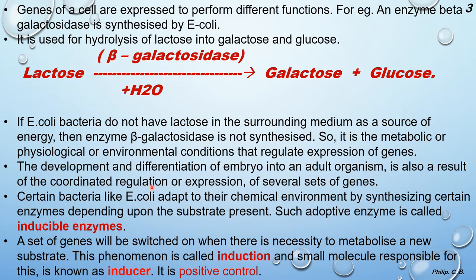The development and differentiation of an embryo into an adult organism is also a result of coordinated regulation of expression of several sets of genes. Each of these genes has its own function to perform in coordinating regulation of expression.